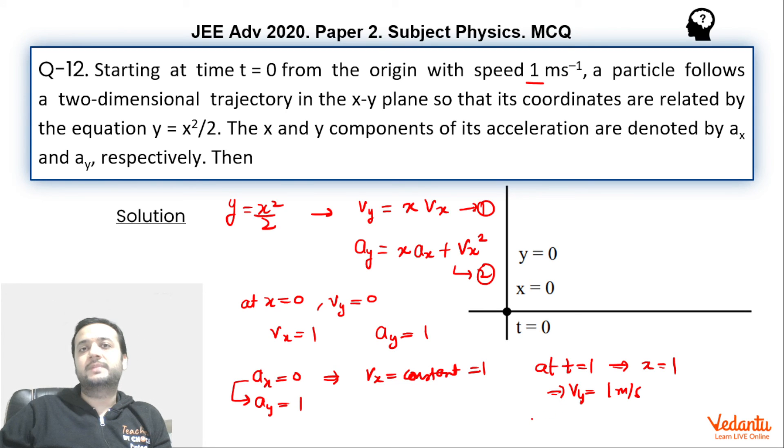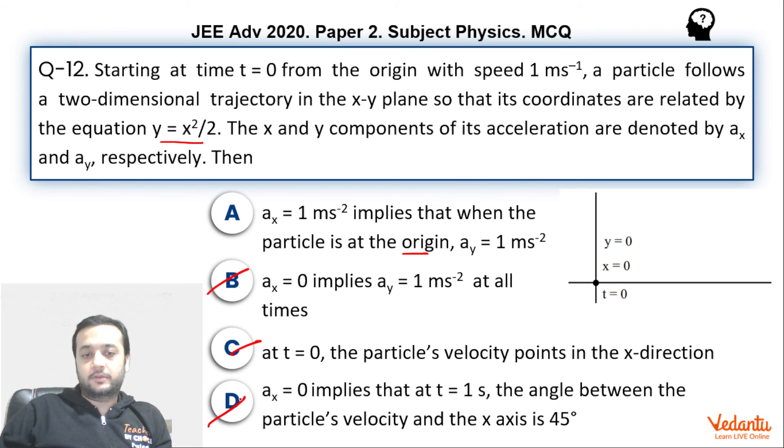Hence, velocity is making an angle of 45 degrees with the x axis. So this is also the option. Option D is also right.